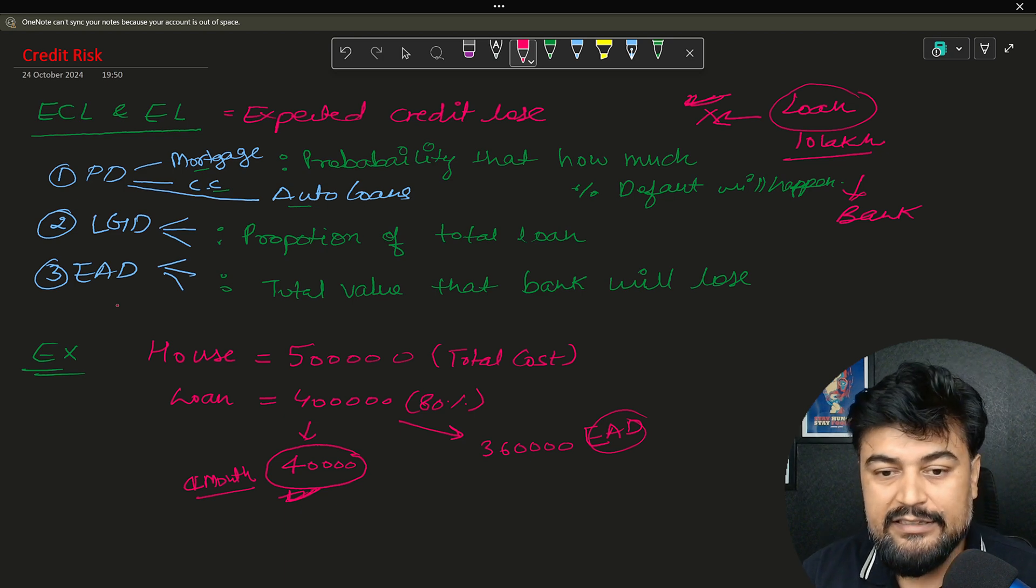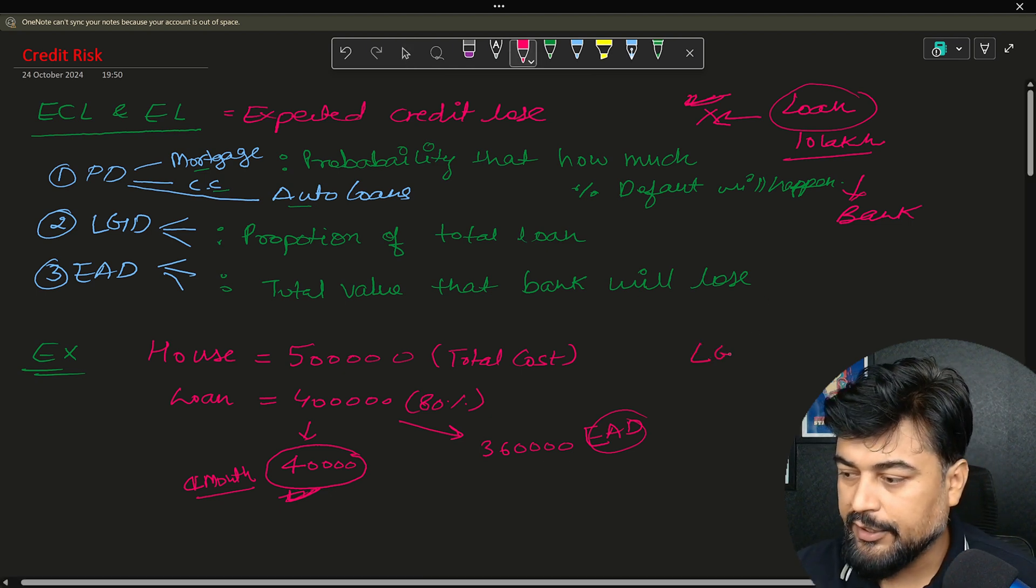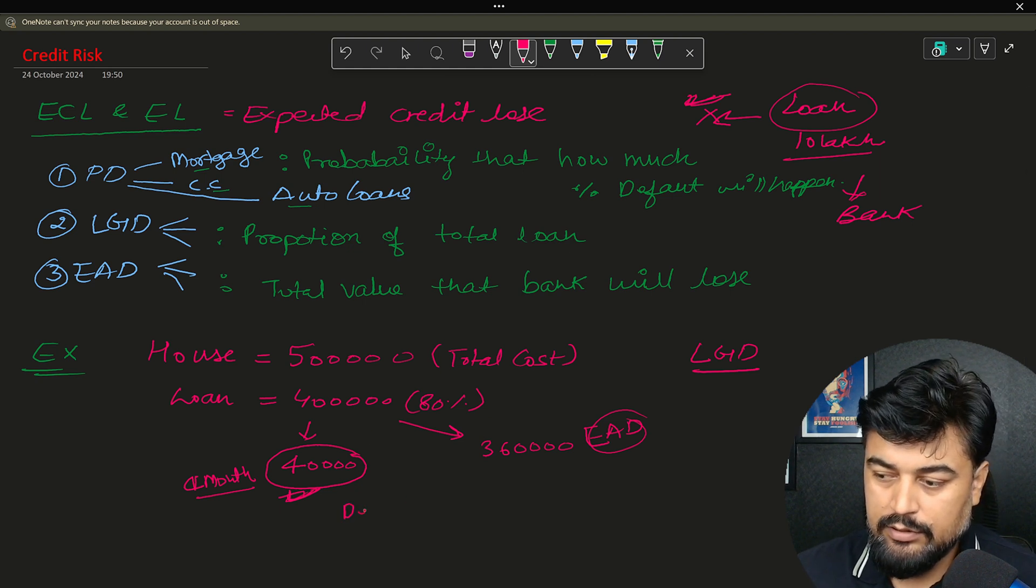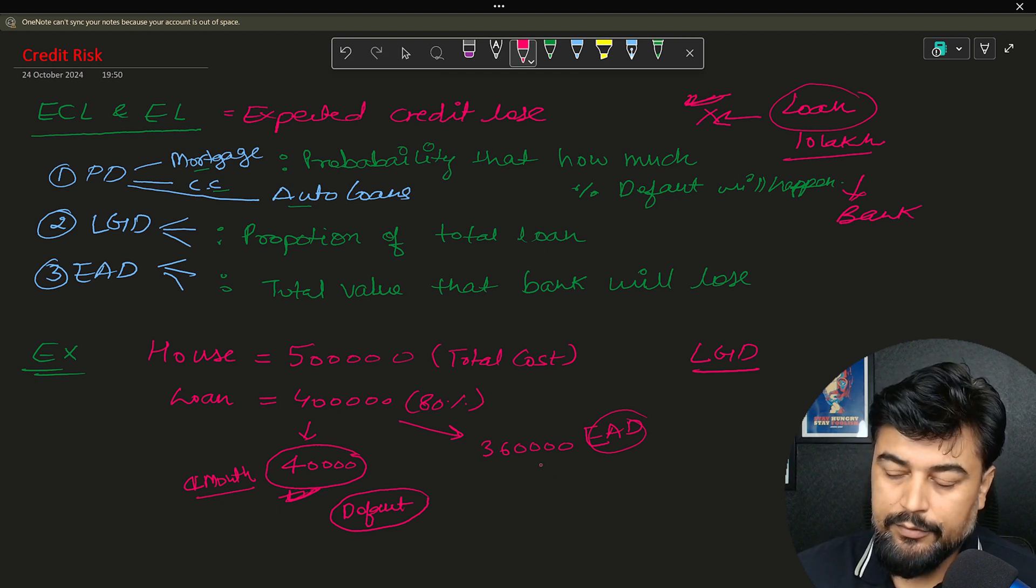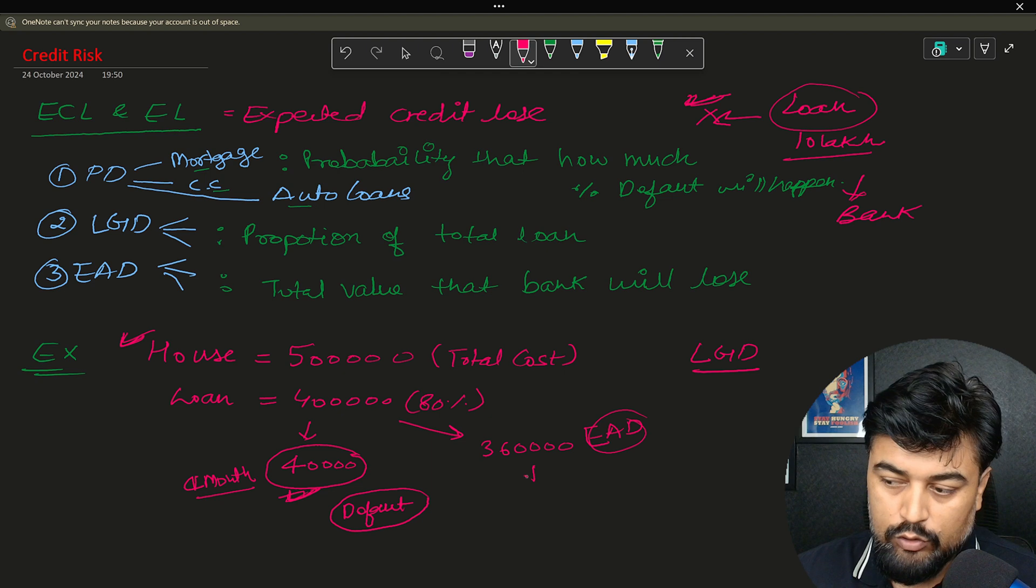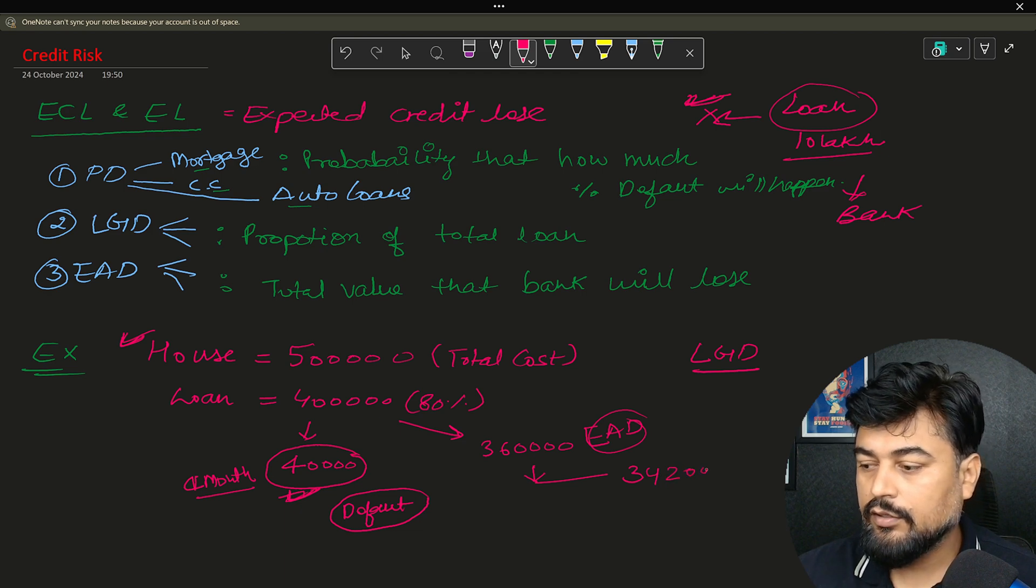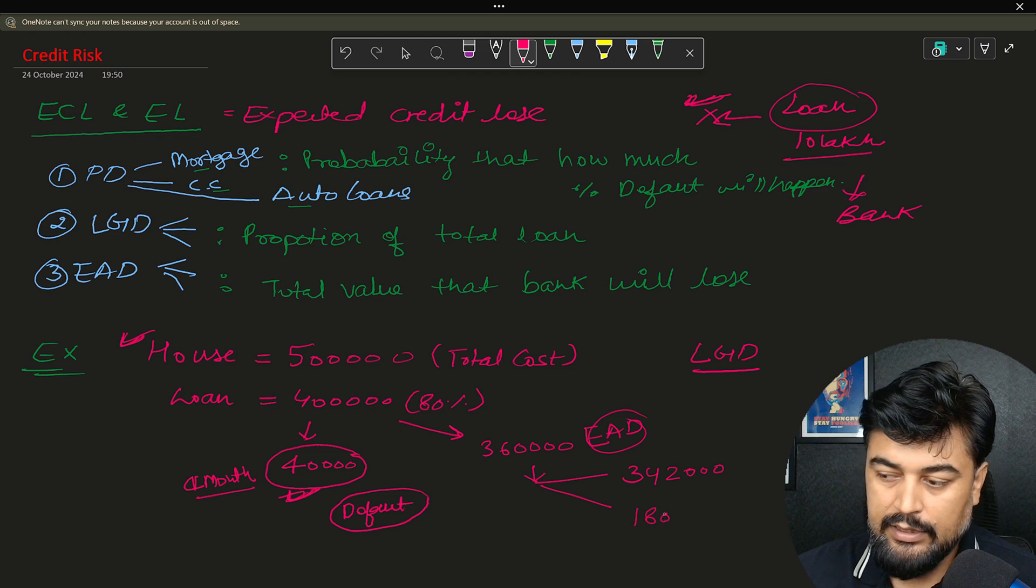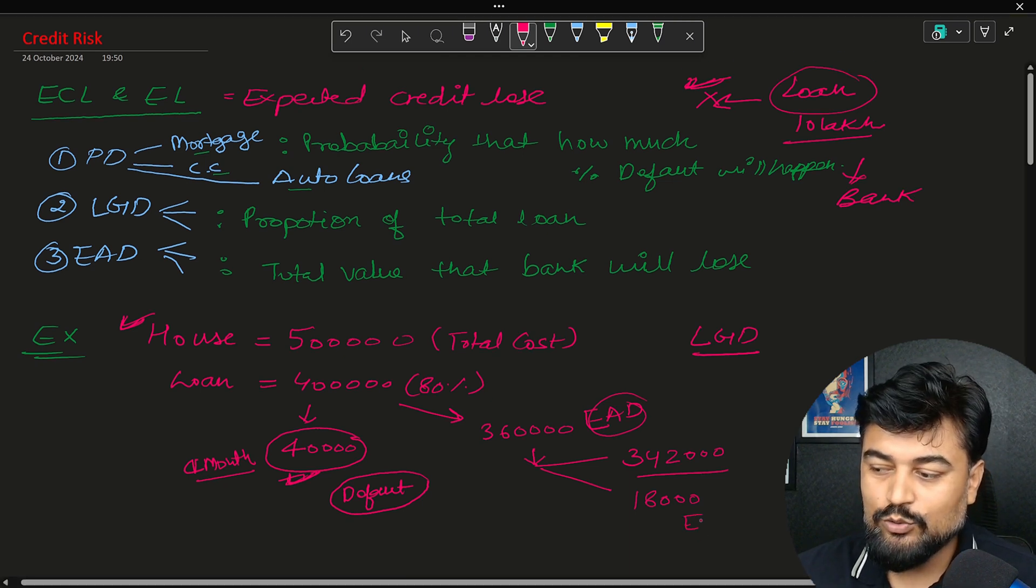Now how to calculate LGD? LGD is a bit tricky compared to the EAD. So to understand LGD, you need to understand this concept. Let's say after paying this 40,000, the person defaults and says that I cannot pay the rest of the money. So what bank decides is that the bank can sell this house, obviously, right? Because bank gave the loan. So bank wants to sell this out, but the market price, the maximum price is 3,42,000, which bank is able to recover. Again in this case, what is the loss? So let's say this 18,000. Now if bank sells this for 3,42,000, so your EAD will change to 18,000.